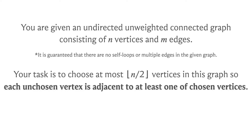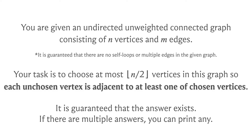Those familiar with graph theory terminology may recognize this as a dominating set. A dominating set is a subset of vertices such that every vertex outside the set has a neighbor in the set. Essentially, this problem asks us to find a dominating set of at most half the vertices. We are also promised that the answer always exists, and if there are multiple answers, you can print any of them.